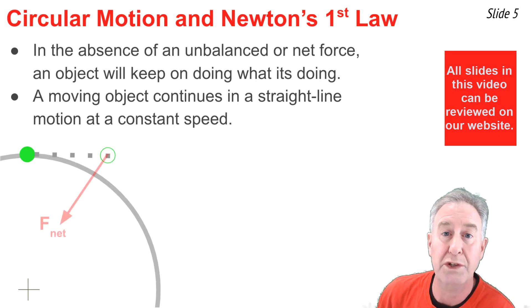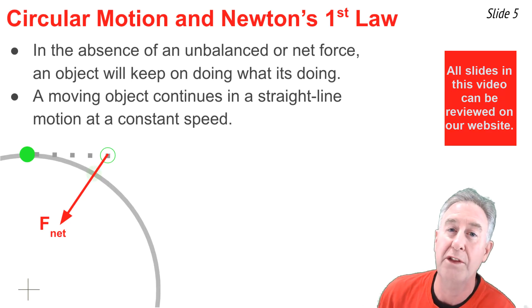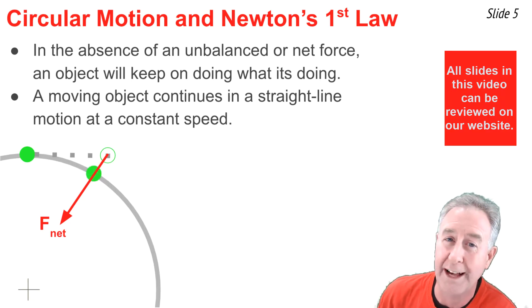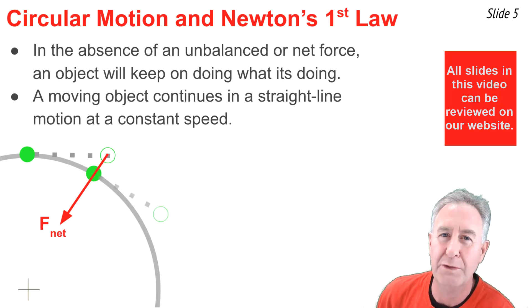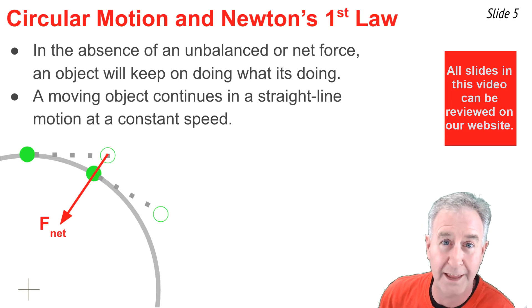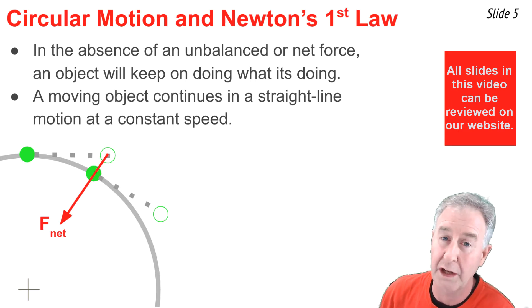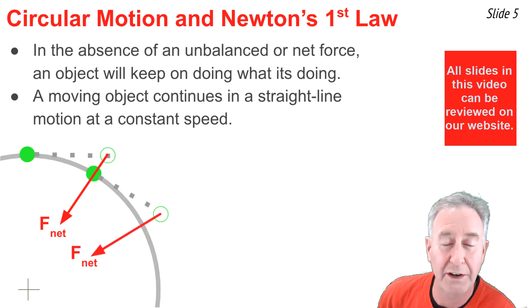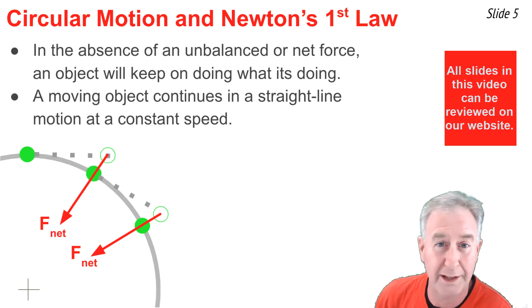But if there were a force directed inwards towards the center of the circle, the object would follow the circular path and end up at the 1 o'clock position. Without an unbalanced force from that position, the object would follow a straight line path. What you need to get it going along the circular path is an inward force directed towards the center, allowing the object to reach the 2 o'clock position.